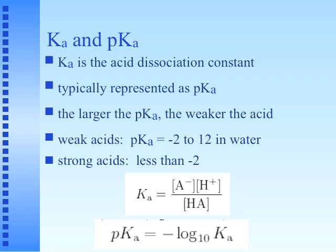Ka equals the concentrations of the products of the reaction: concentration of A− times concentration of H+ over concentration of the acid HA — we leave water out of this equation. To get pKa, I take the log base 10 of Ka and change the sign: if log Ka is negative, pKa becomes positive.